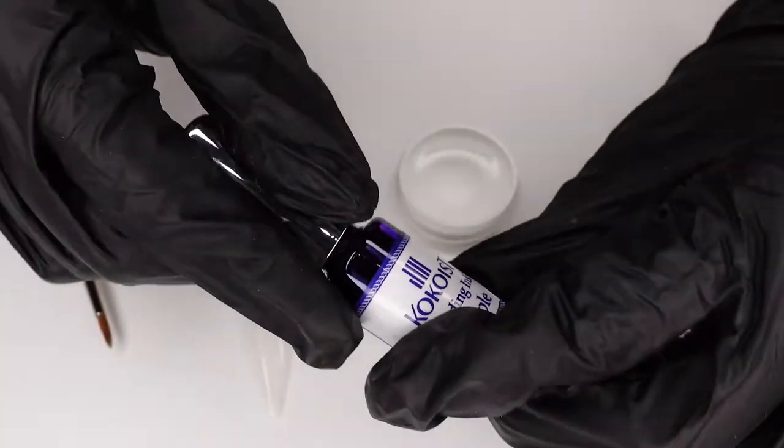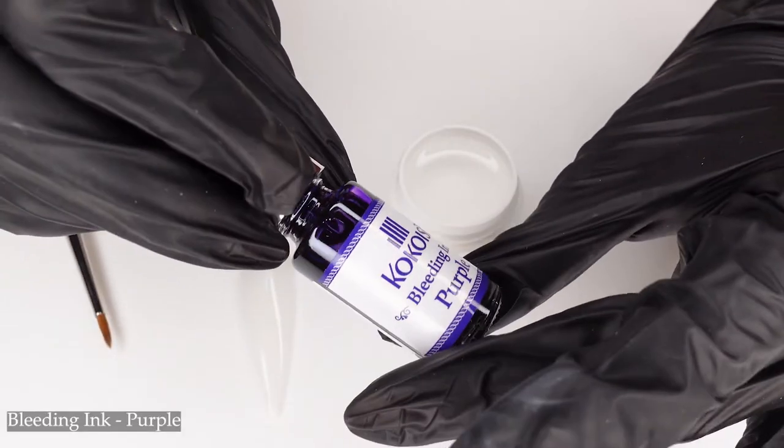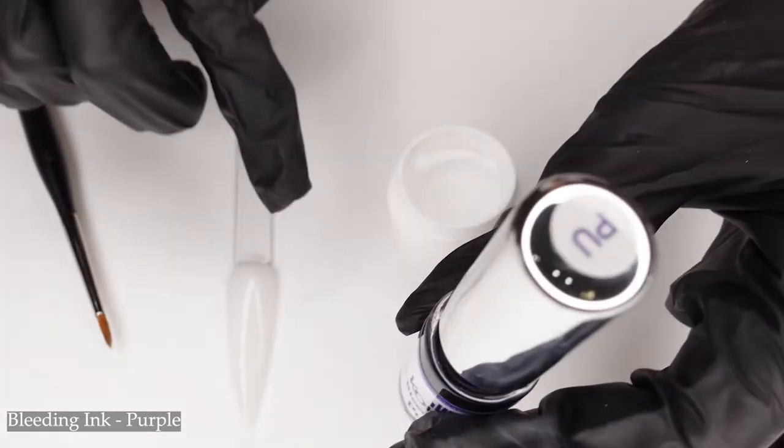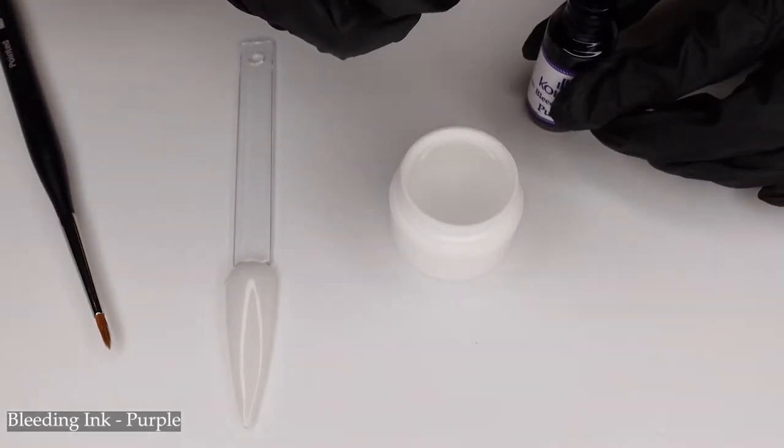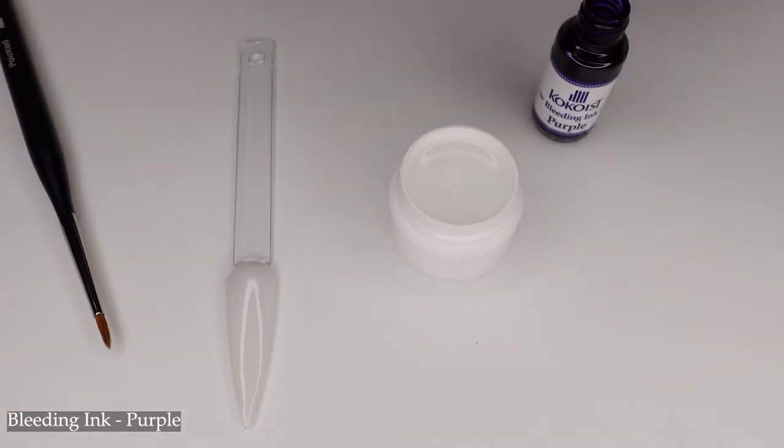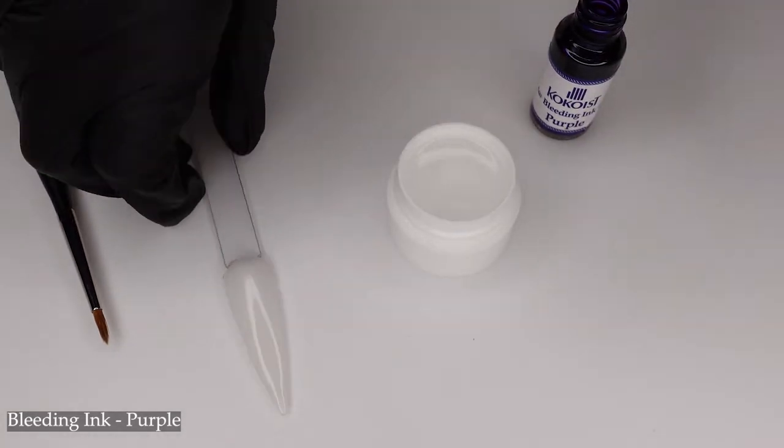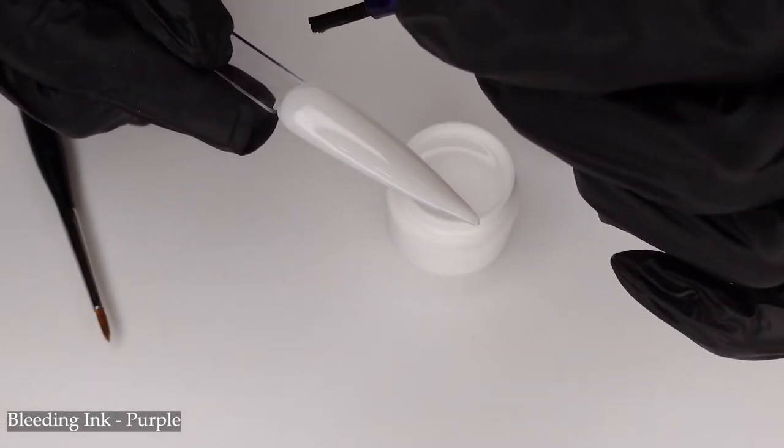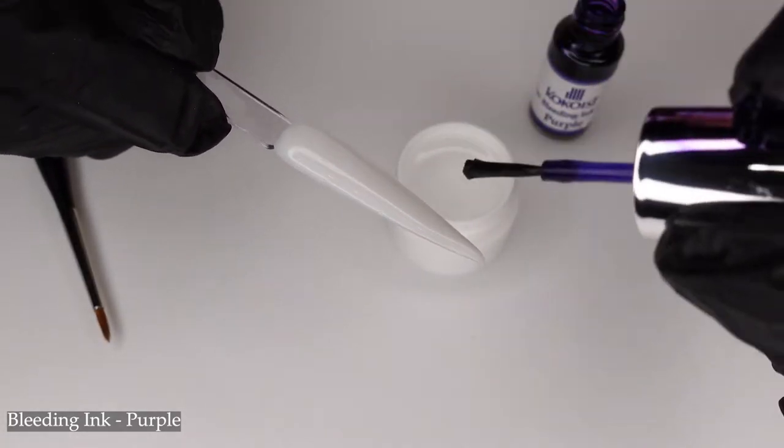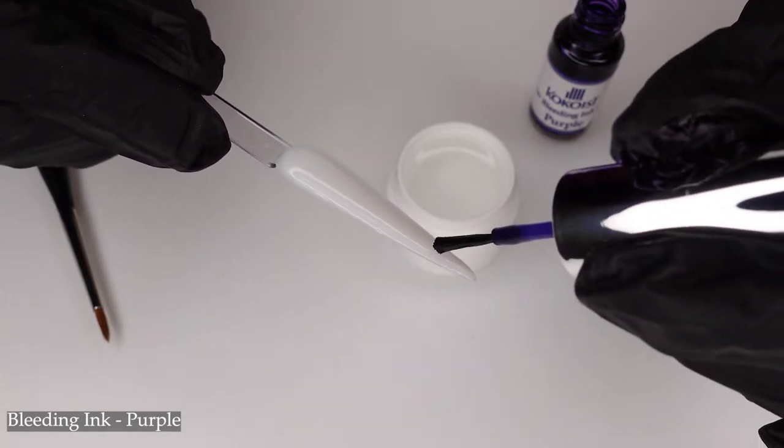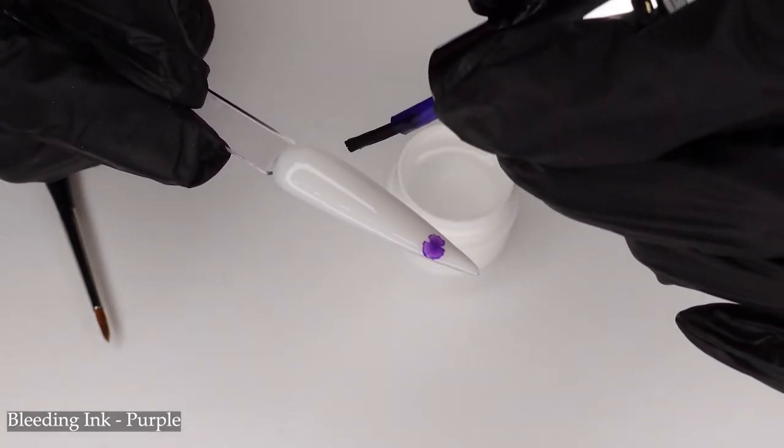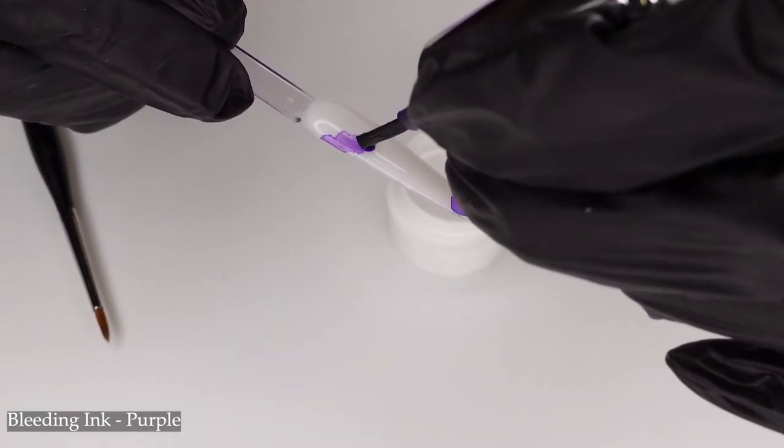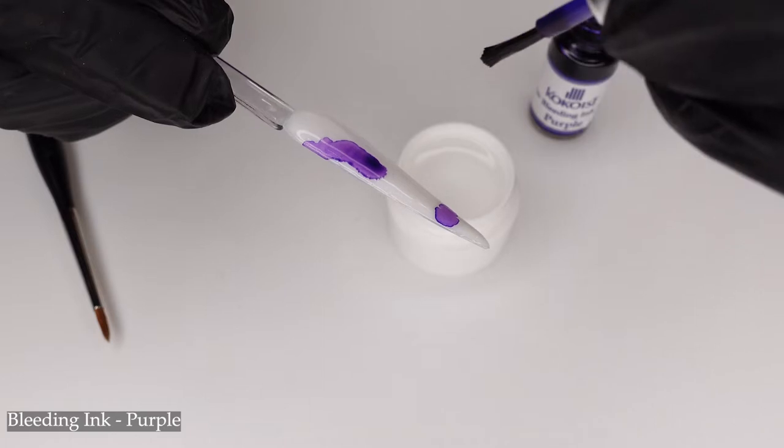So what I'm basically going to do is I'm just going to take my Bleeding Ink right here. I already have my nail tip prepped. And then you don't need a lot for this because it spreads pretty well. But all I'm going to do is dot it in the areas that I want to place it on, so I'm just going to do it randomly. I want some here, and then I'll put some right here. That looks about good.